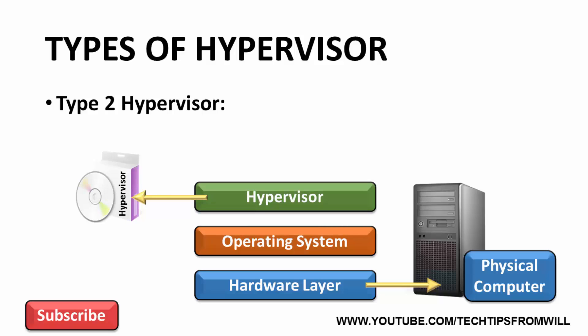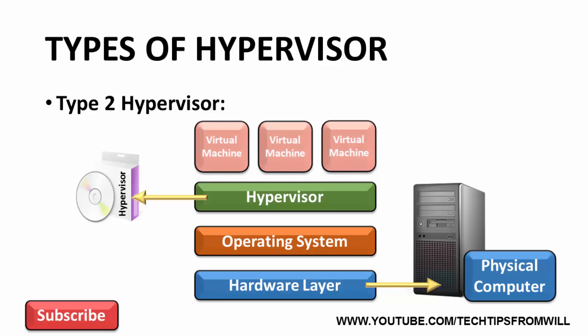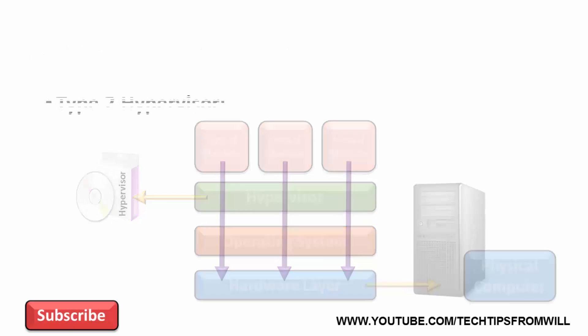With the hypervisor in place, the administrator can then create virtual machines. In order to access the hardware on the host computer, the virtual machines first have to go through the hypervisor and then through the host operating system. This additional layer makes type 2 hypervisors slower than their type 1 counterparts. However, type 2 hypervisors are usually cheaper to implement and easier to configure.